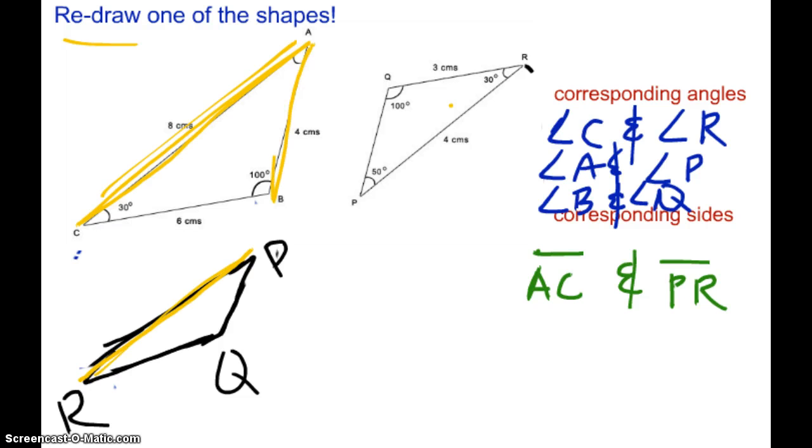All right. What about AB, let me do a different color. AB. What would AB correspond to? It would correspond to PQ. So we're going to say segment AB, and segment PQ are corresponding.